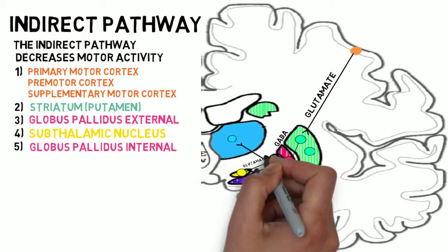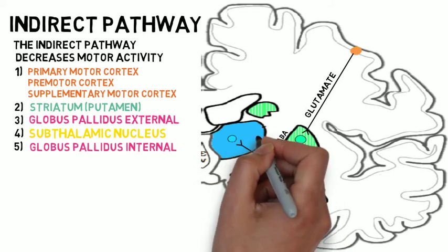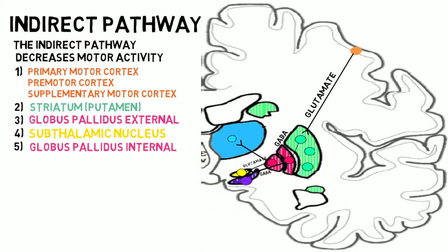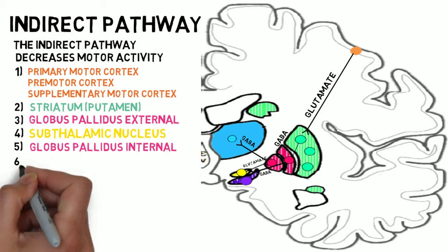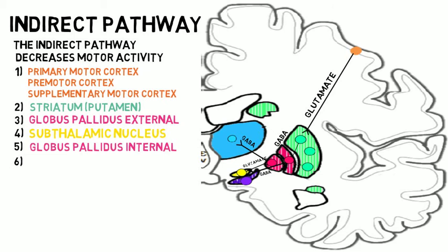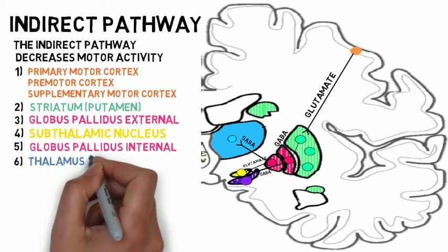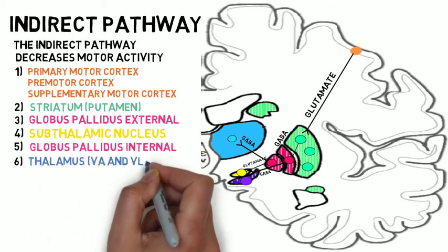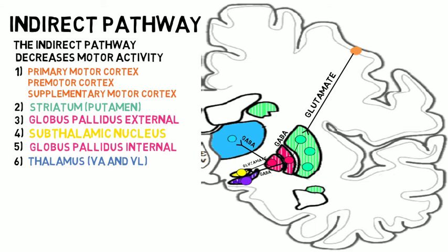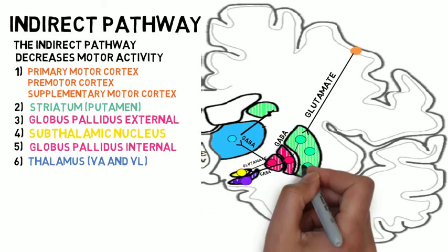The subthalamic nucleus contains tonically active neurons that secrete glutamate at their axon terminals in the globus pallidus internal. Increasing the firing rate of the GABAergic neurons in the globus pallidus internal leads to more inhibition of the motor thalamus and less stimulatory input to the motor cortex. The end result of the indirect pathway is increased inhibition of the thalamic neurons and decreased activation of the motor cortex.